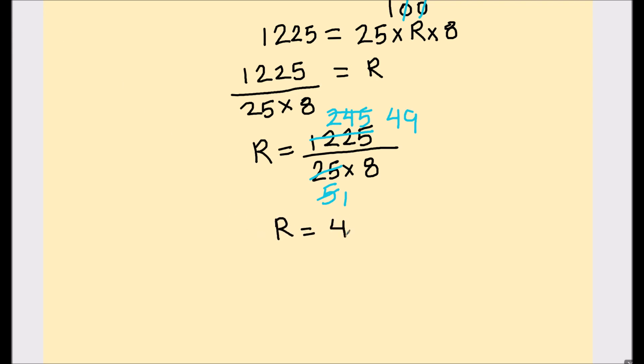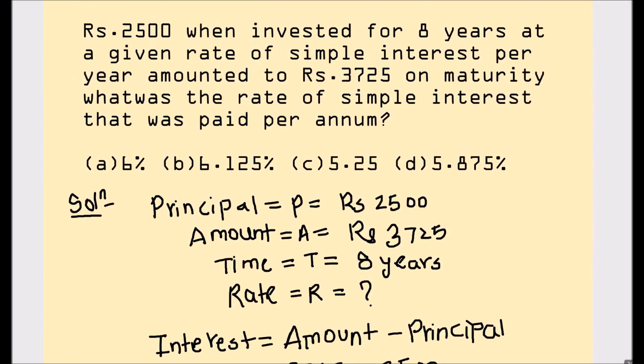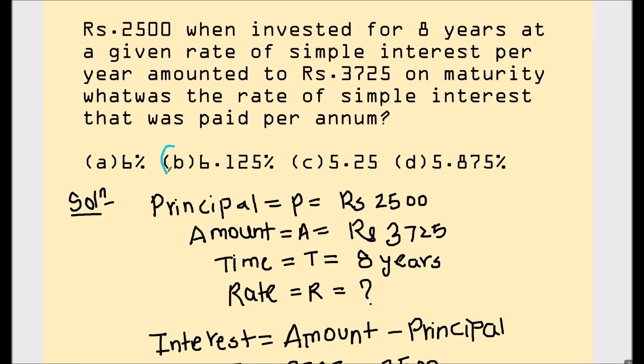We have R equals 49 divided by 8. And 49 divided by 8 is 6.125. As it is in percentage, R is 6.125%. Let's go back to our options here. Option B is our correct answer.